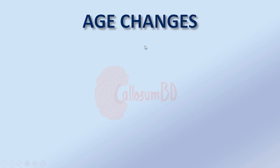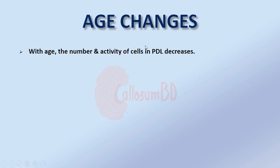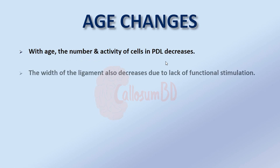Age changes of the periodontal ligament: with age, the number and activity of cells in the periodontal ligament decreases. The width of the ligament also decreases due to lack of functional stimulation.